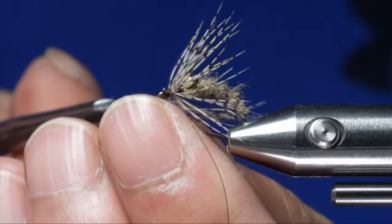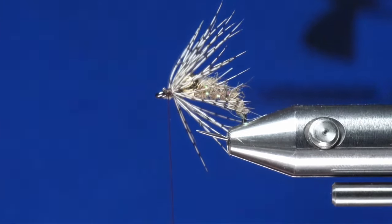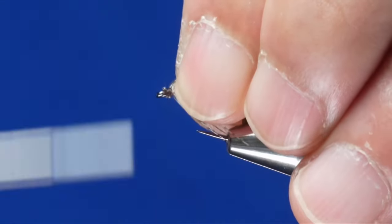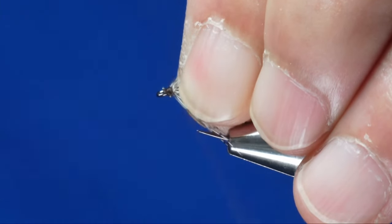Trim off the excess hackle, and then just clean up the head of the fly with your thread.